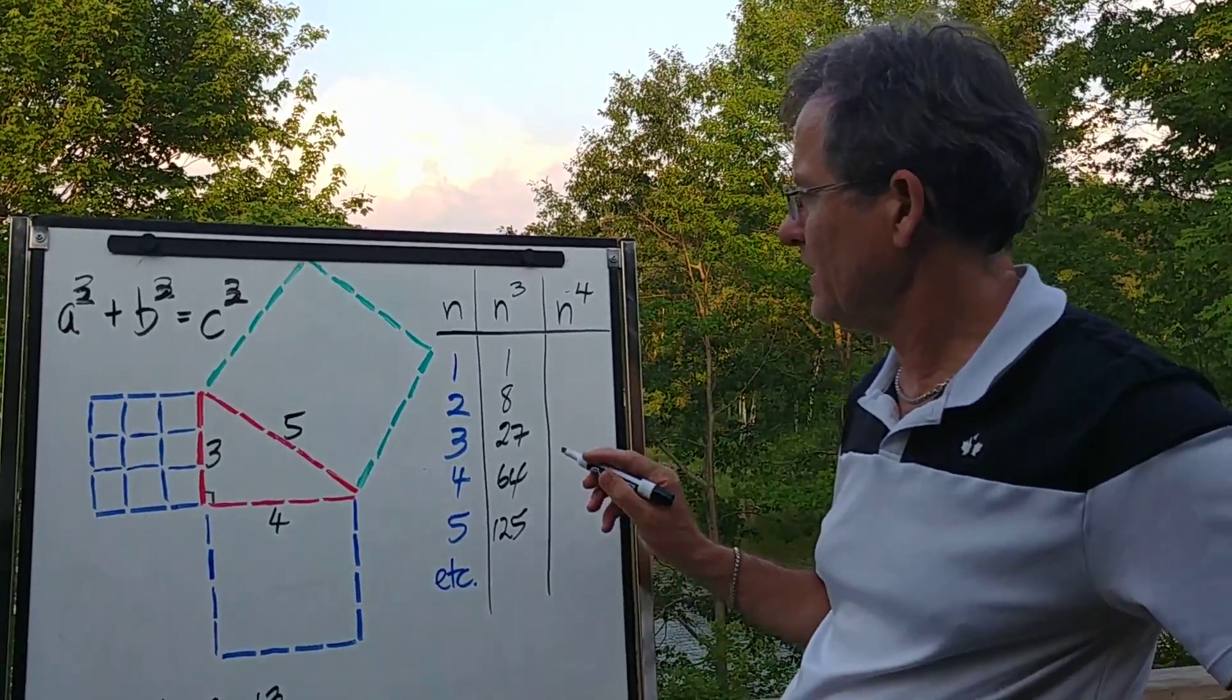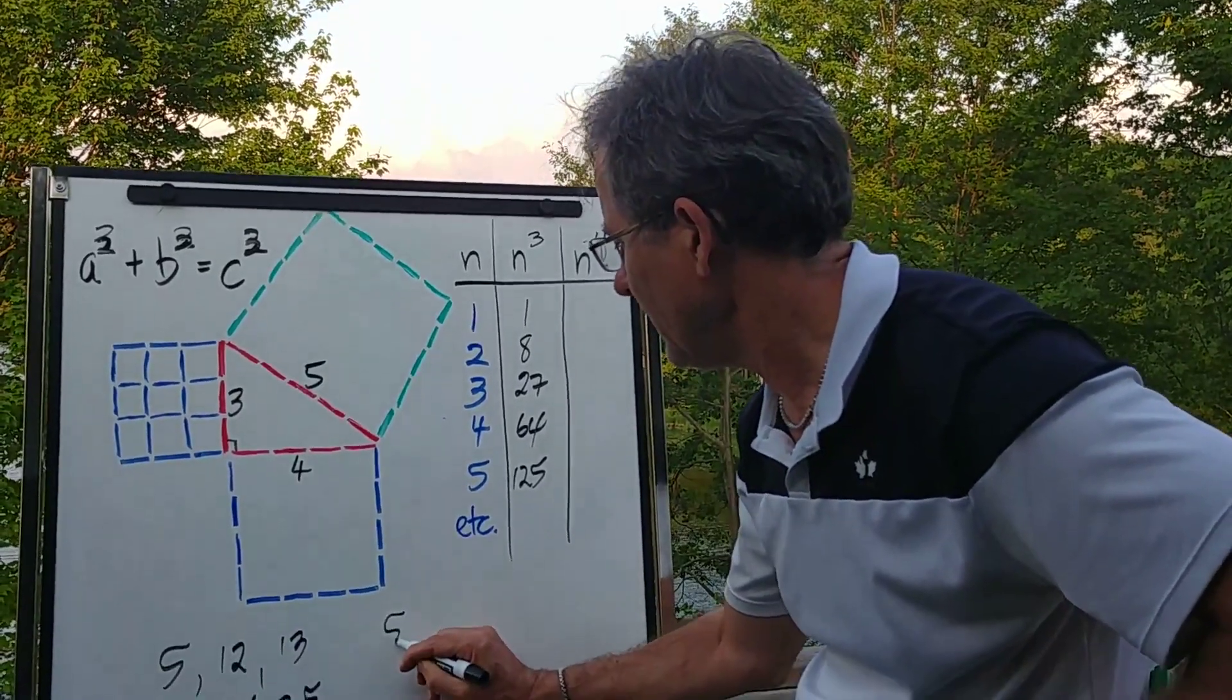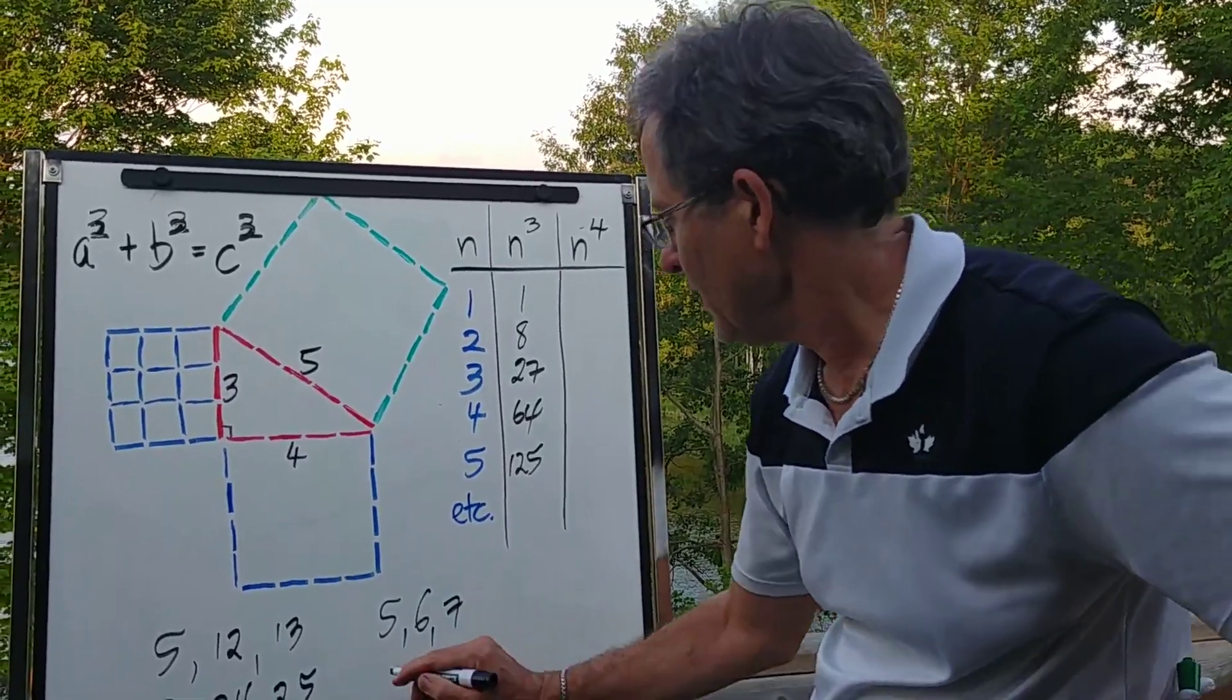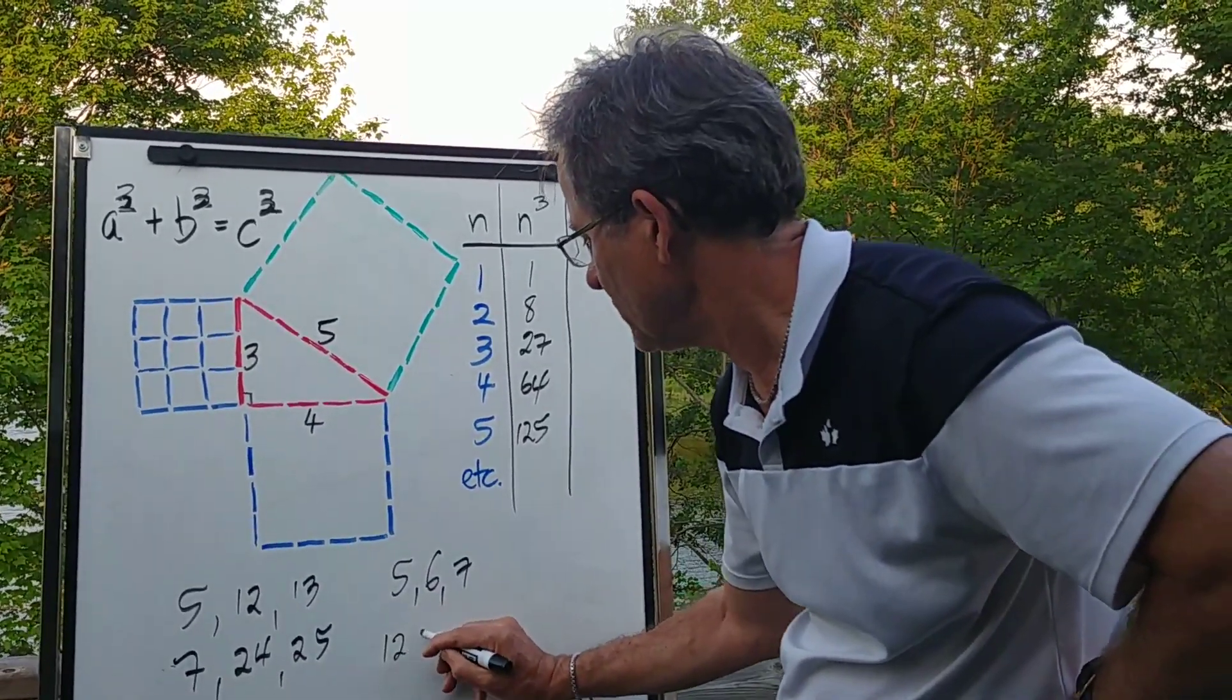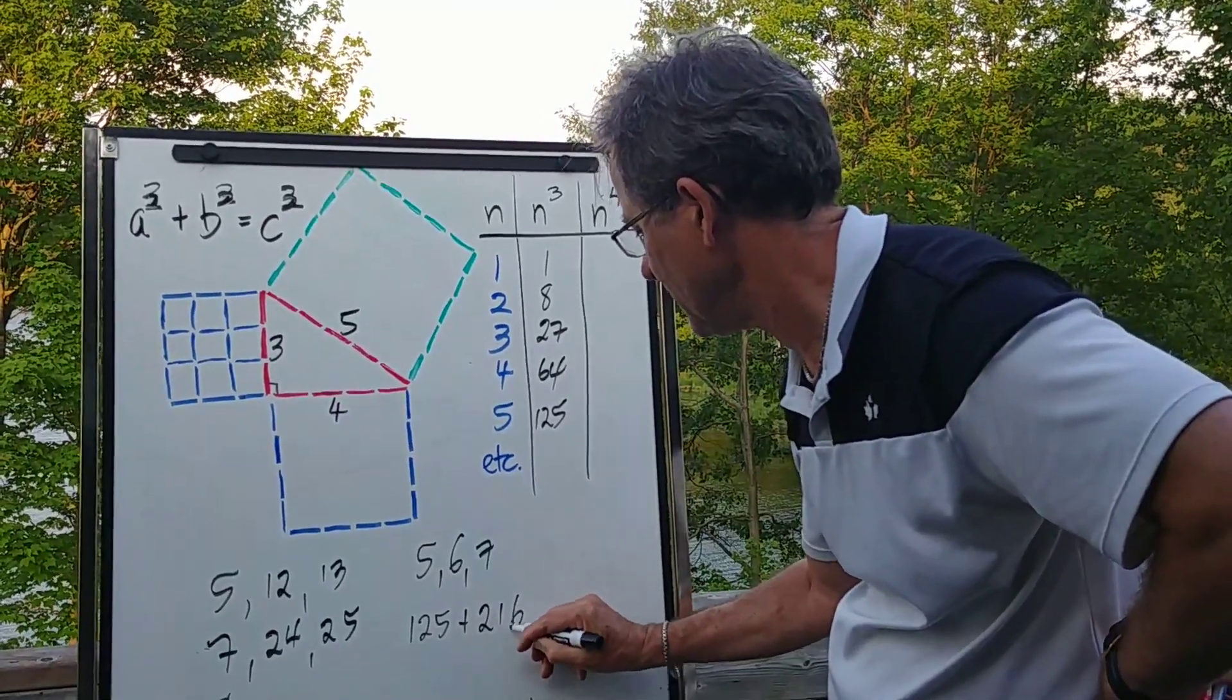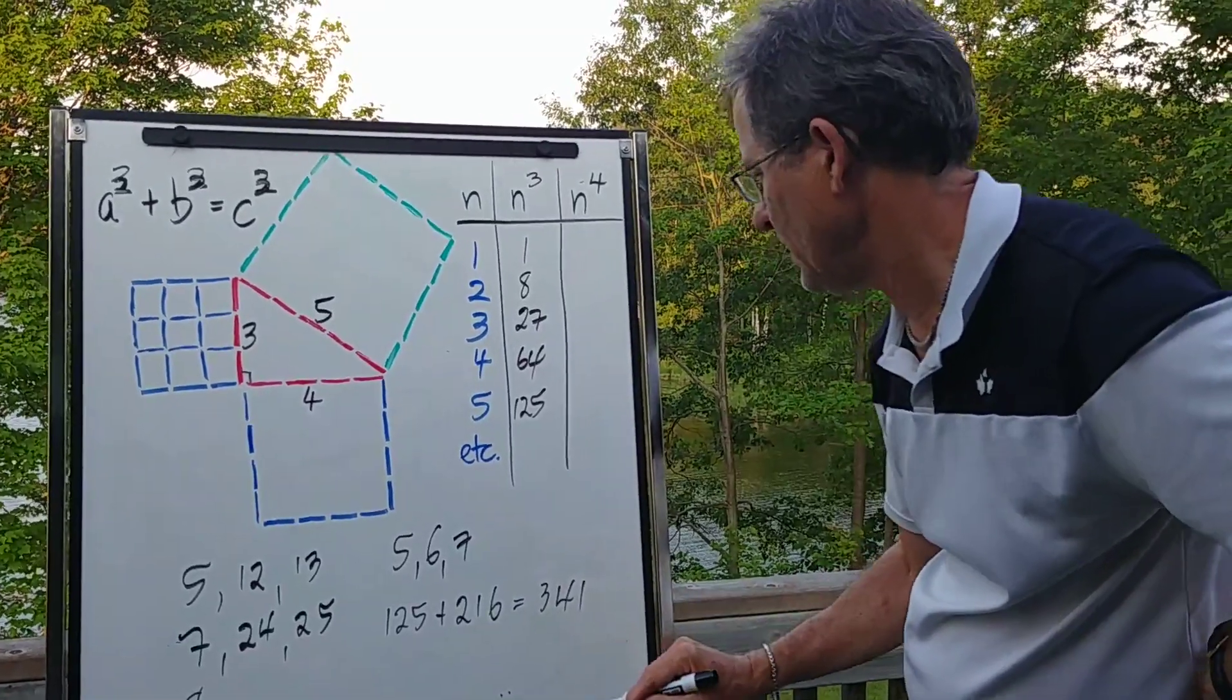And see if you can find any that satisfy that equation. For example, you might want to try 5, 6, and 7. 5 cubed is 125, like it says here. 6 cubed is 216. If you add those together, you get 341.